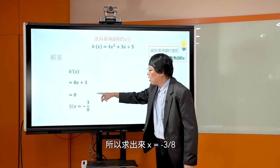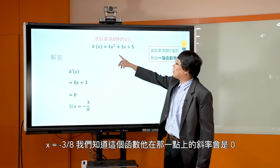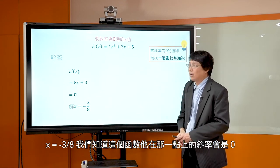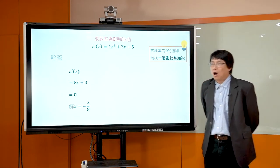所以求出来 x = -3/8。所以等于 x = -3/8 的时候，我们知道这个函数它的在那一点上面，它的斜率会是0，也就是它会是水平线。